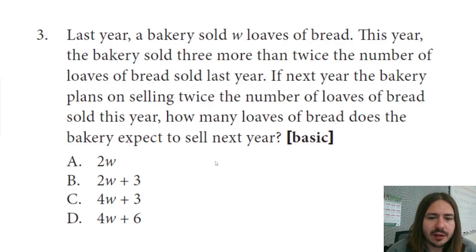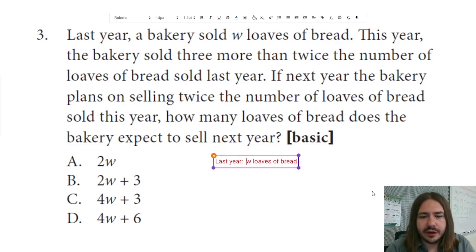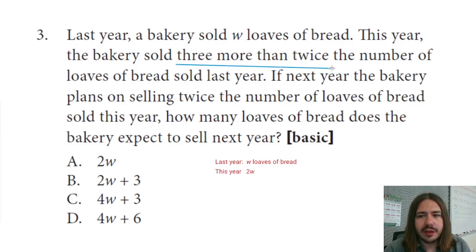Okay, so last year we sold W loaves of bread. And then this year, I'm going to keep track of this as I read it. This year the bakery sold three more than twice the number of loaves of bread sold last year. So if it was twice the number of loaves of bread as last year, it'd be 2W. But it does say three more than twice the number of loaves of bread. The three more than is going to be a plus three.